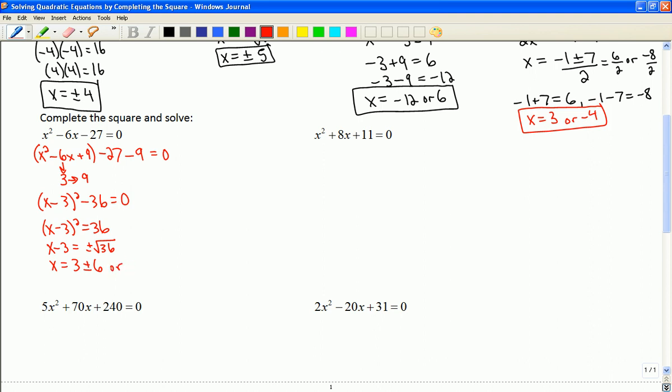So x is equal to 3 plus or minus 6. Or I could call that 3 plus 6 is 9, 9 and negative 3. So that's how we can use completing the square to solve a quadratic equation as well.